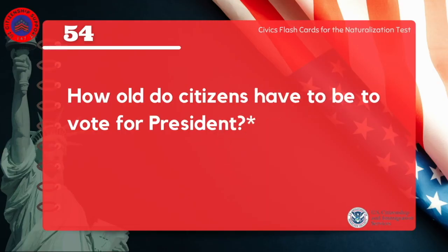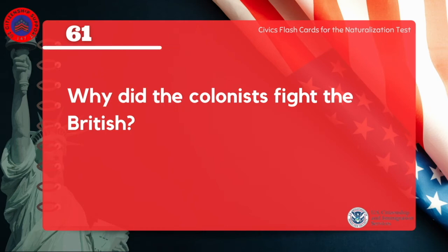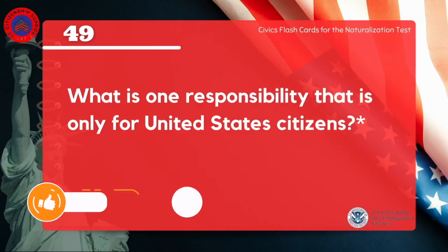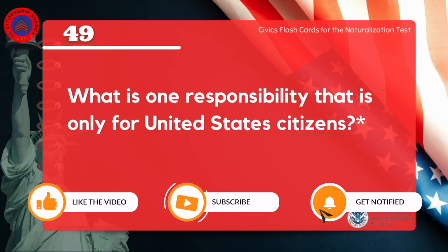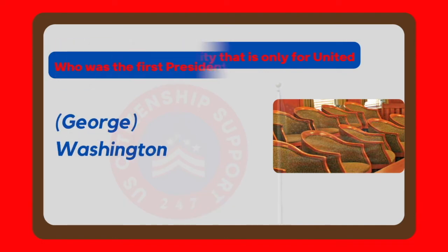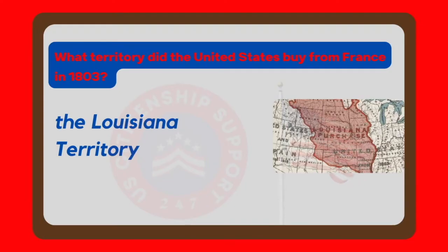How old do citizens have to be to vote for president? 18 and older. Why did the colonists fight the British? Because of high taxes. What is one responsibility that is only for United States citizens? Serve on a jury. What territory did the United States buy from France in 1803? The Louisiana Territory.